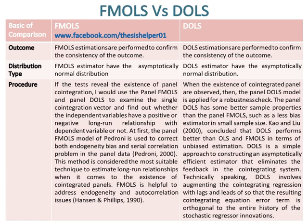Procedure of FMLS: if the tests reveal the existence of panel cointegration, the panel FMLS and panel DOLS are used to examine the single cointegration vector and find out whether the independent variables have a positive or negative long-run relationship with the dependent variable. The panel FMLS model of Pedroni (2000) is used to correct both endogeneity bias and serial correlation problems in the panel data.